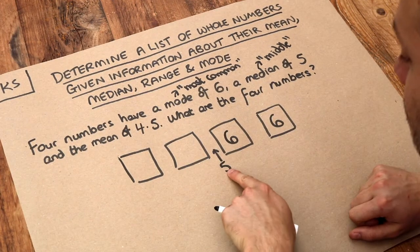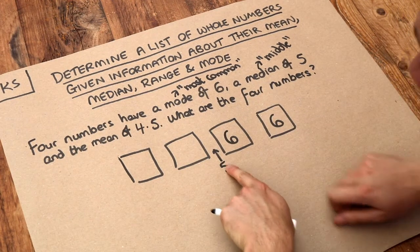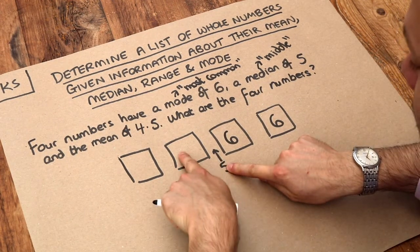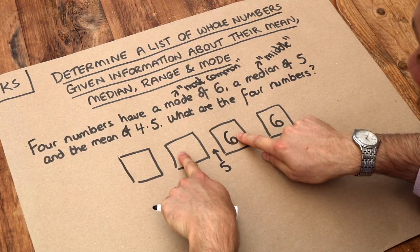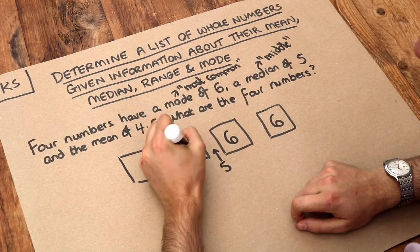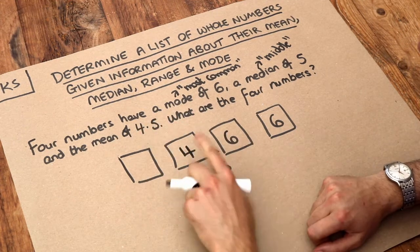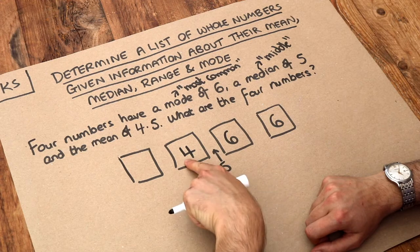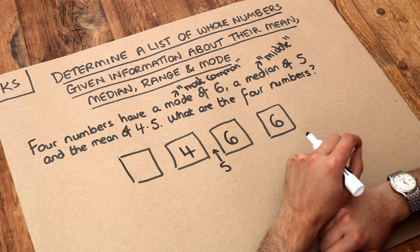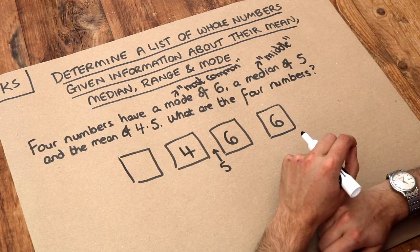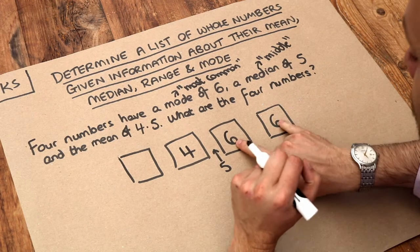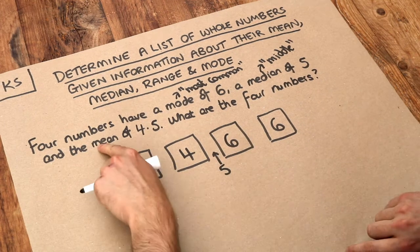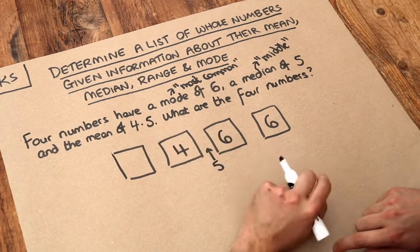Because this median of five is halfway between this number and this number, this number here must be four — because then five is halfway between four and six. So we've now used the mode and the median. The last thing to use is the mean.